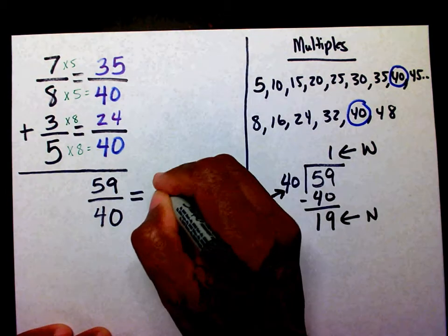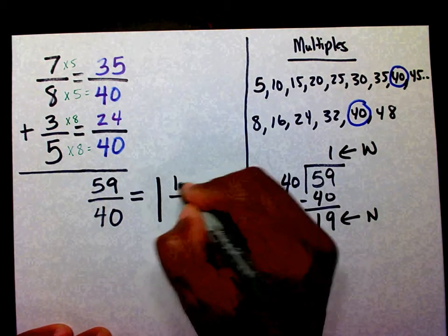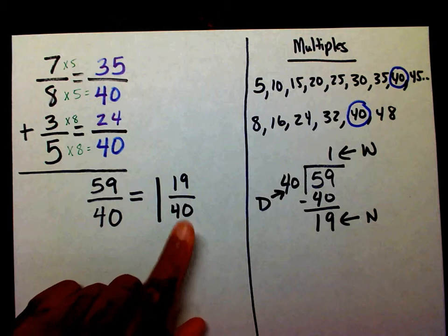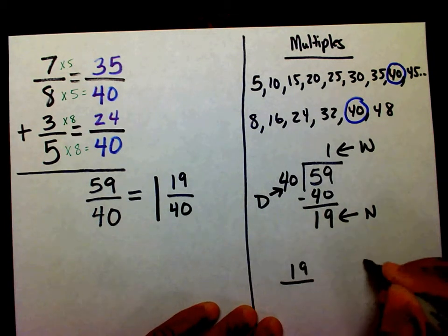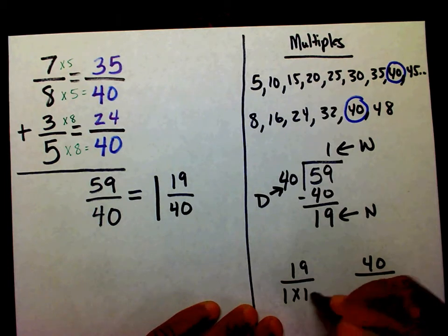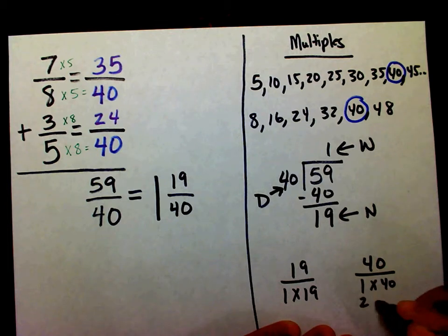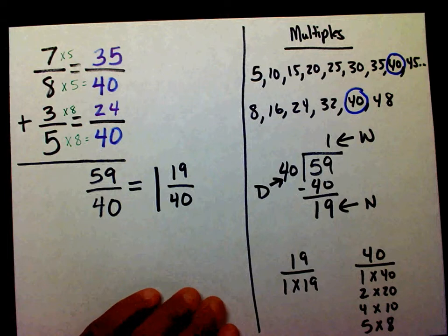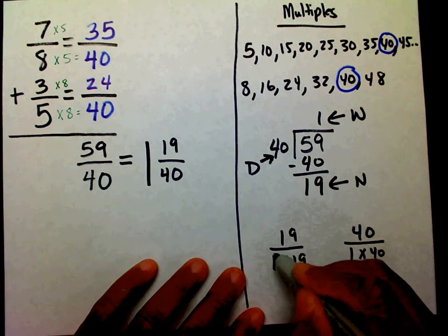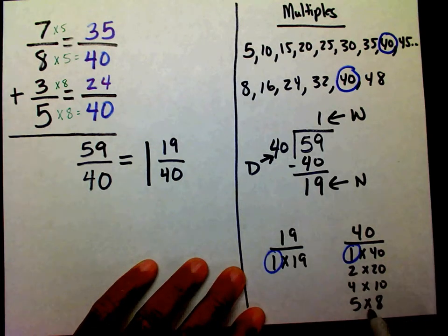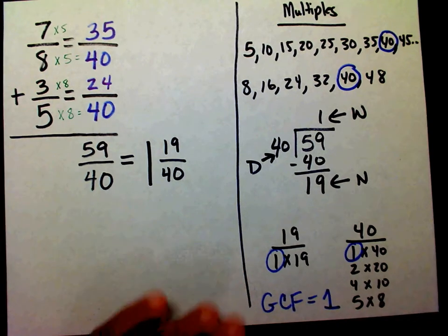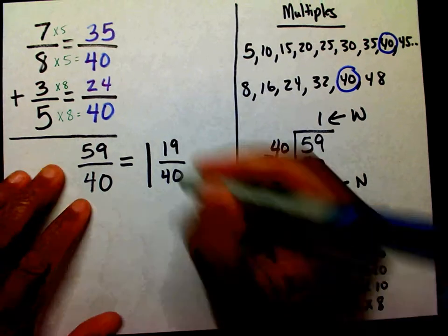So my whole number is 1, my numerator is 19, and my denominator is 40. Now I need to check and make sure this is in lowest terms. I want to find the factors of 19 and 40. The factors of 19 are 1 and 19. For 40: 1 and 40, 2 and 20, 4 and 10, 5 and 8. The only factor they share in common is 1, so the GCF is 1. Since my GCF is 1, I know this is in its lowest form.